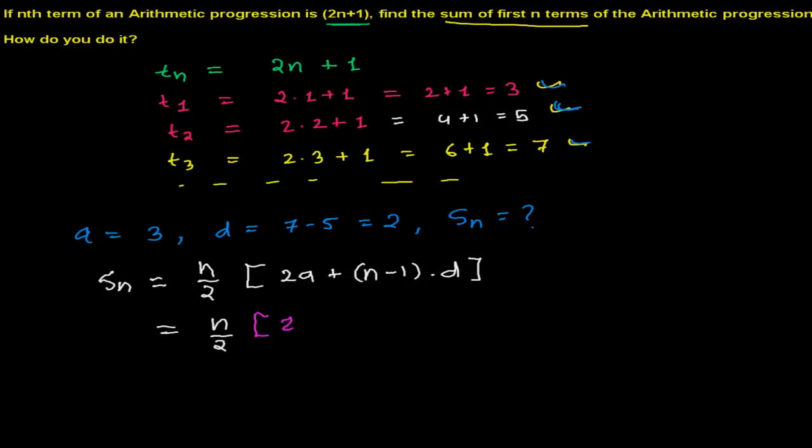So here my n I don't know, that's why I'm writing n by 2. But here I know a few things, so whatever I know I'm going to write: 2 times first term, first term is my 3, so I'm going to write 3, and then plus n minus 1, but I know the value of common difference, that is 2. And the bracket closed, and again n by 2. So 2 times 3, that is 6 in the bracket.